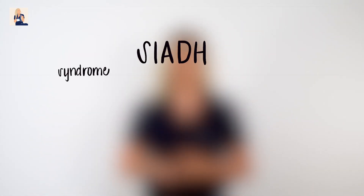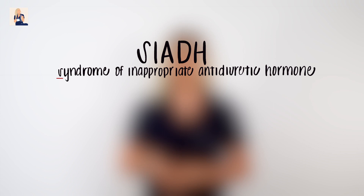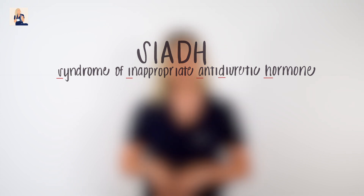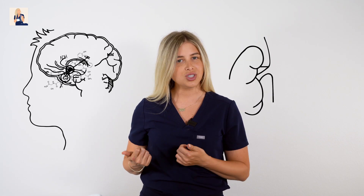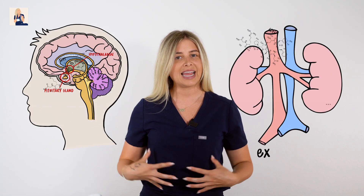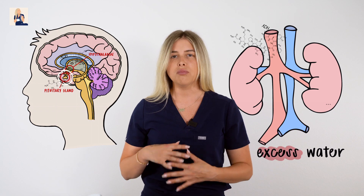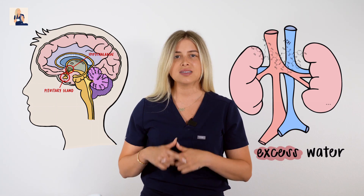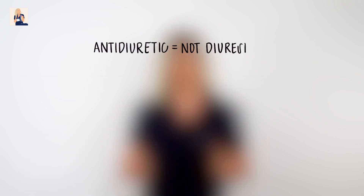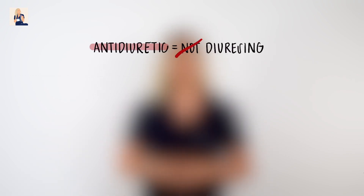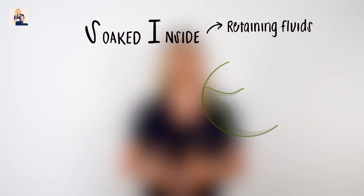SIADH, or syndrome of inappropriate anti-diuretic hormone, means that too much ADH is being released from the pituitary gland. ADH runs over to the kidneys to tell them their new job, and the kidneys respond by retaining excess water in the body — more than we need — and that upsets the body's balance of electrolytes. Remember, anti-diuretic means we are not diuresing, and the body is behaving inappropriately in SIADH. You can remember this by thinking SI for soaked inside: you're retaining fluids and plumping up like a little water balloon.